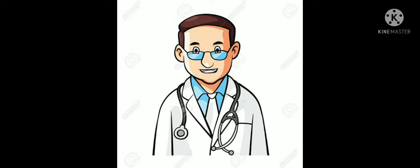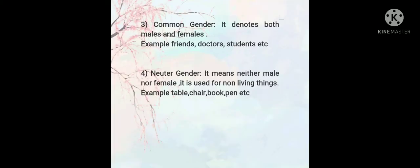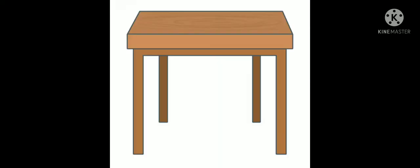And fourth one is neuter gender. It means neither male nor female. It is used for non-living things. This gender is neither male nor female. It is used for things that have no life, that have no gender. We use this for non-living things.